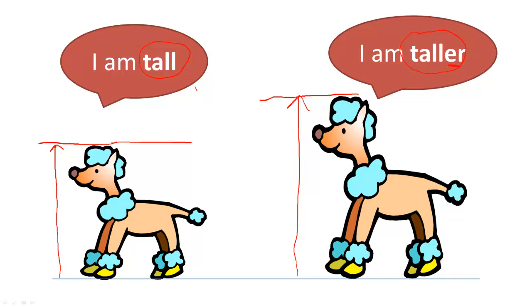You don't have to draw this line all the time. Sometimes you can just look at the picture and know which dog is taller. You only need to draw the line if you are not sure. So we've learned the words tall and taller.